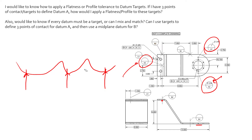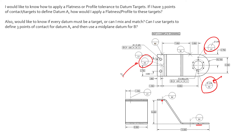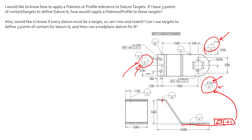Three points is certainly not enough to give any credible understanding of the form of that surface. But if you wanted to, you could set up datum targets A1, A2, and A3 and then come back and control the bottom surface with a flatness callout in the traditional way — though again, that flatness is not being applied to the datum targets themselves.